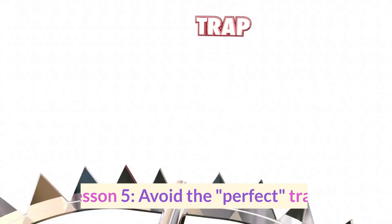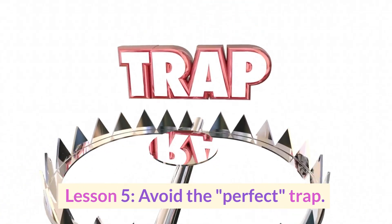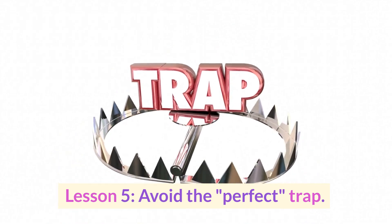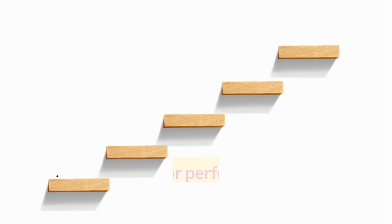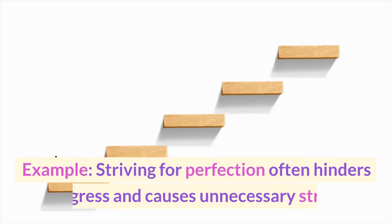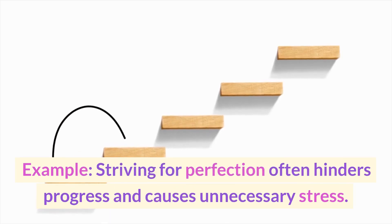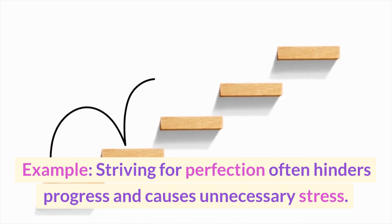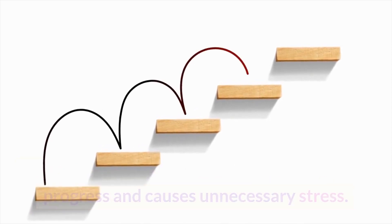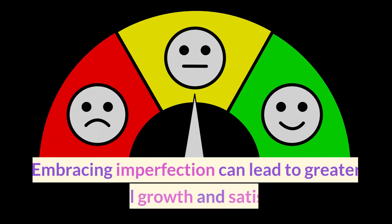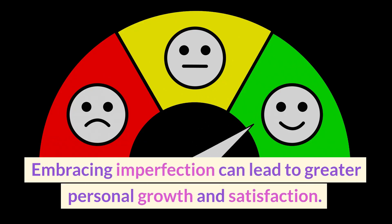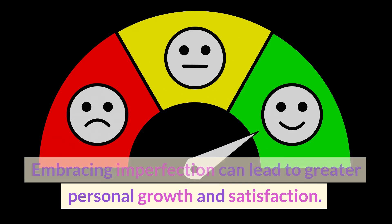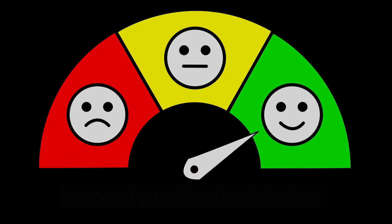Lesson 5: Avoid the perfect trap. Striving for perfection often hinders progress and causes unnecessary stress. Embracing imperfection can lead to greater personal growth and satisfaction.